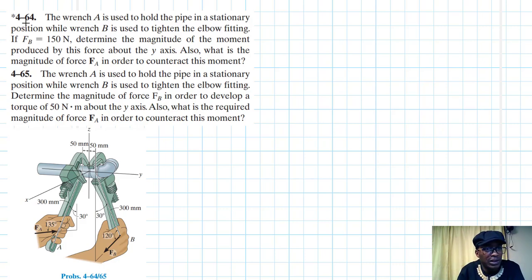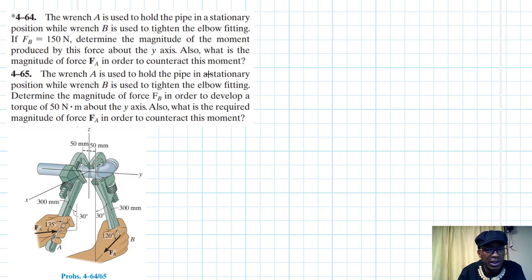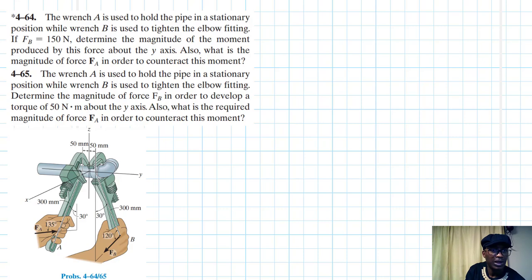Welcome to this screencast. Wrench A is used to hold the pipe in a stationary position while wrench B is used to tighten the elbow fitting. If FB equals 150 N, determine the magnitude of the moment produced by this force about the y-axis, and what is the magnitude of force FA to counteract this moment. In the second case, determine the magnitude of force FB to develop a torque of 50 Newton-meters about the y-axis, and the required magnitude of FA to counteract that moment.